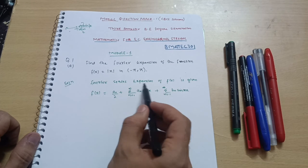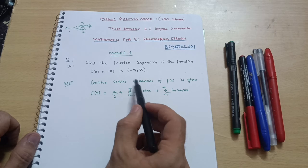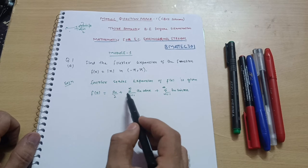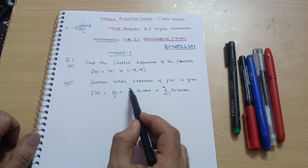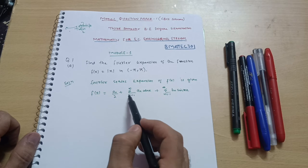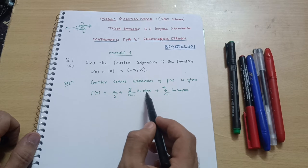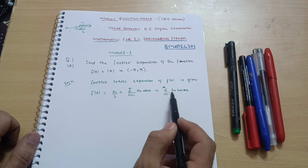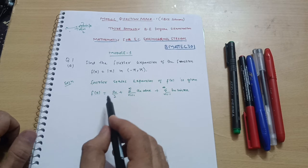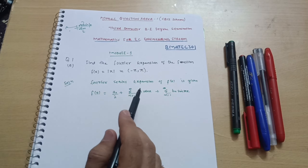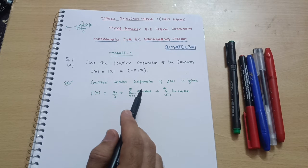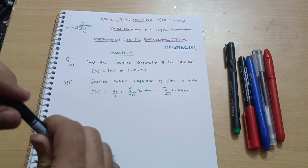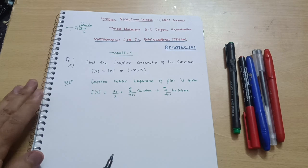This is the general Fourier expansion for the interval minus pi to pi, where f(x) = a₀/2 plus summation from n=1 to infinity of aₙ cos(nx) plus summation from n=1 to infinity of bₙ sin(nx). You should write these formulas on a separate A4 sheet and practice them on a daily basis. You will definitely remember these Fourier series formulas.